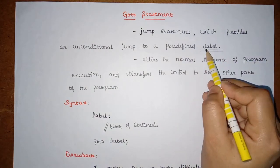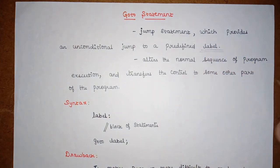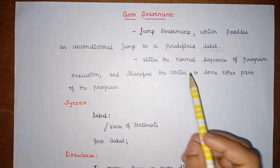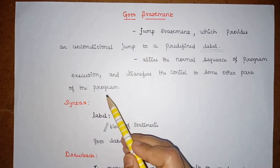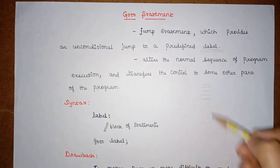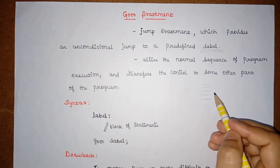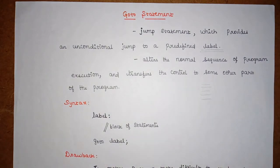When we use this goto statement, we also have a term called label. With the help of this label, we are going to jump from one part of the program to another. This goto statement alters the normal sequence of program execution. We know that program execution happens sequentially, line by line, one after another. This goto statement alters that normal sequence and transfers control from one part of the program to another.